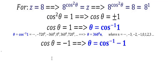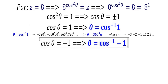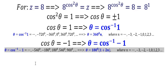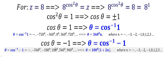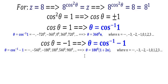When cosine theta equals minus 1, theta is cosine inverse of minus 1, and this is the third solution. Theta equals cosine inverse of minus 1, which is 180 degrees, 540, 900, minus 180, minus 540, and so on. That is theta equals 180 degrees times (1 plus 2n), where n is any integer from negative infinity to infinity.